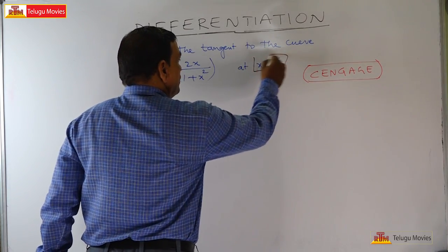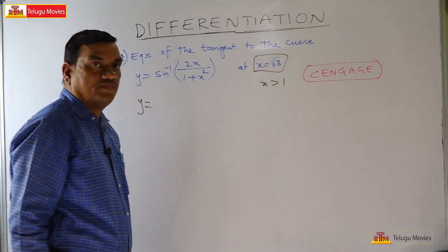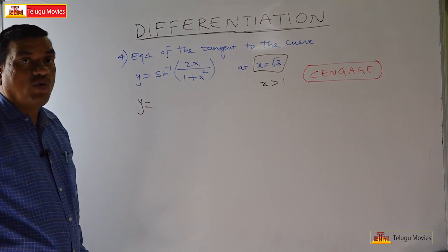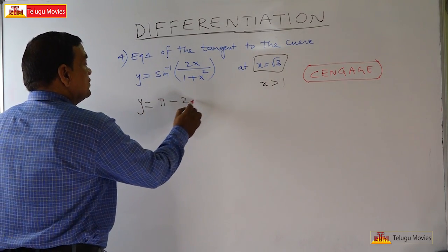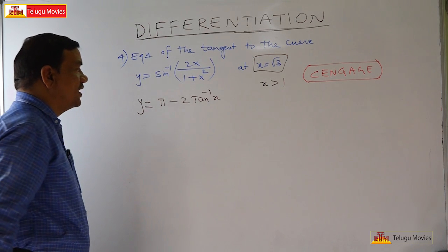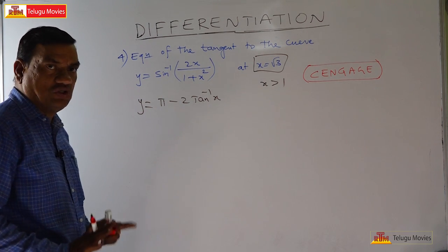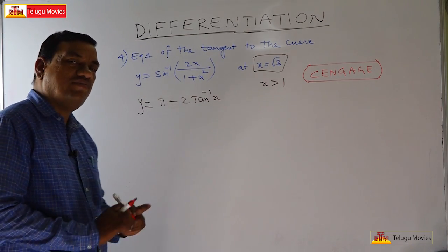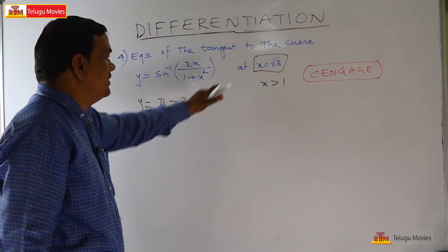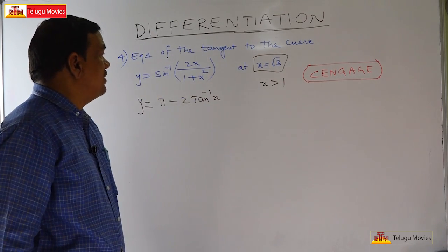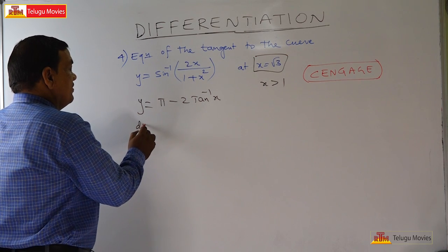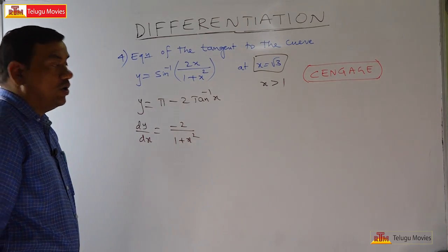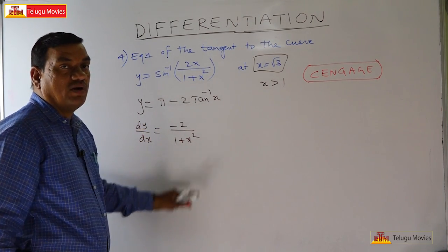Since x = √3, we have x > 1. When x > 1, the identity gives: sin⁻¹(2x/(1+x²)) = π - 2tan⁻¹(x). This is the crucial simplification step. Once you know this identity, the differentiation becomes straightforward.